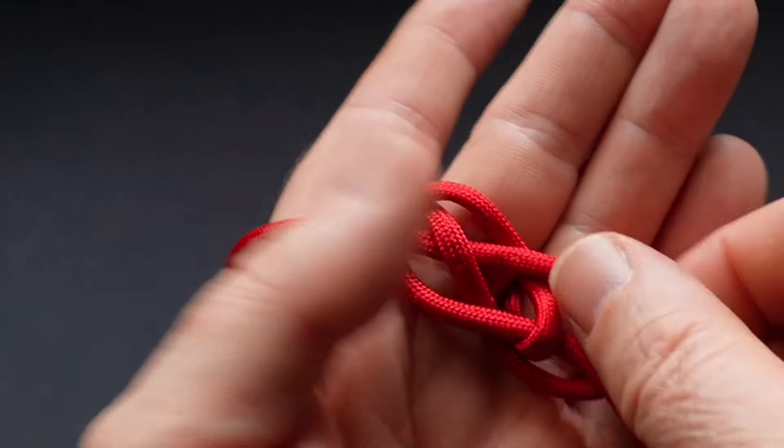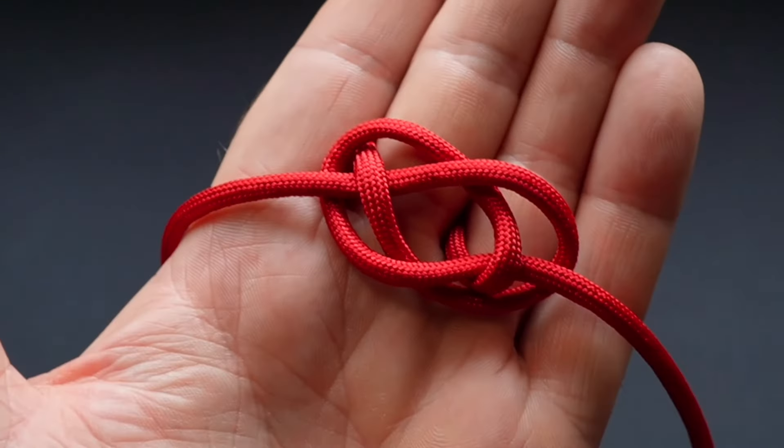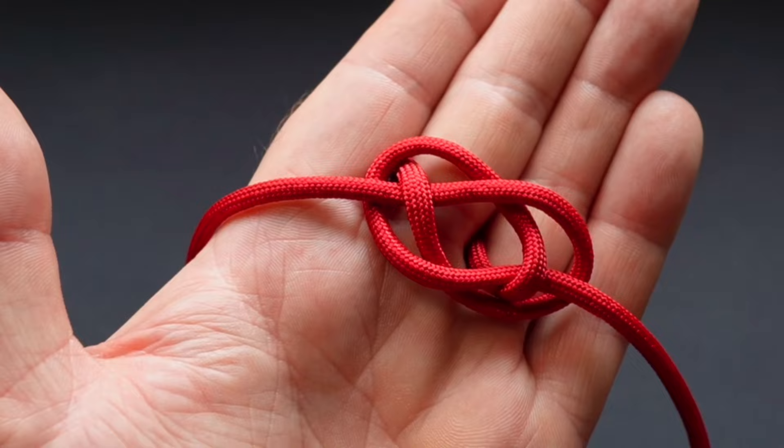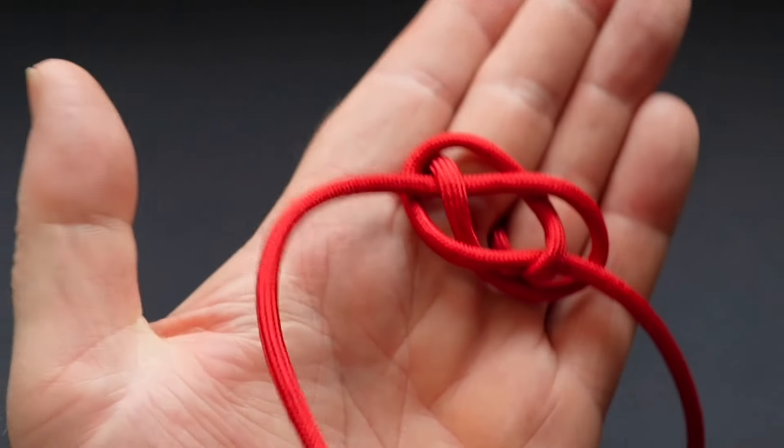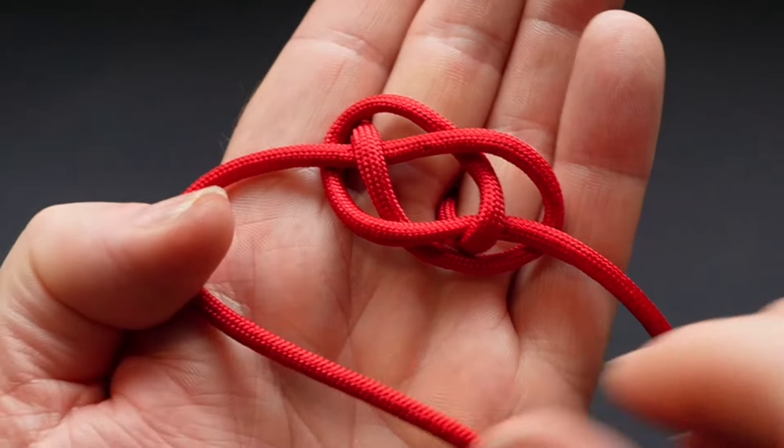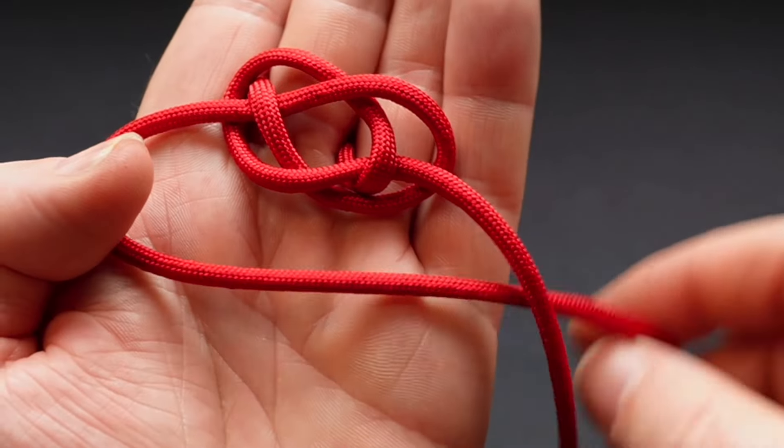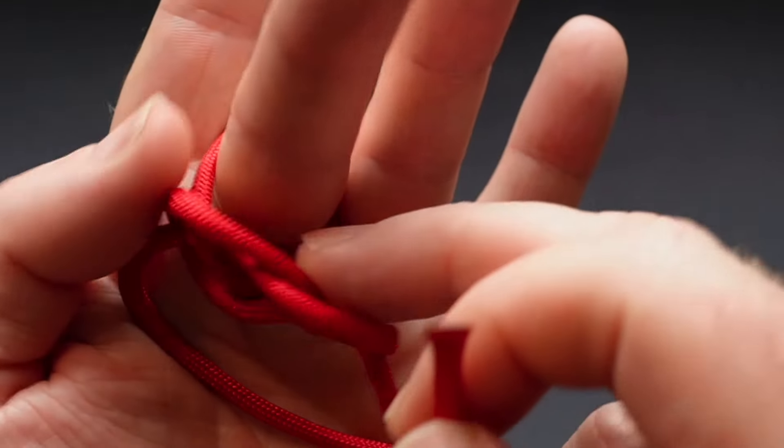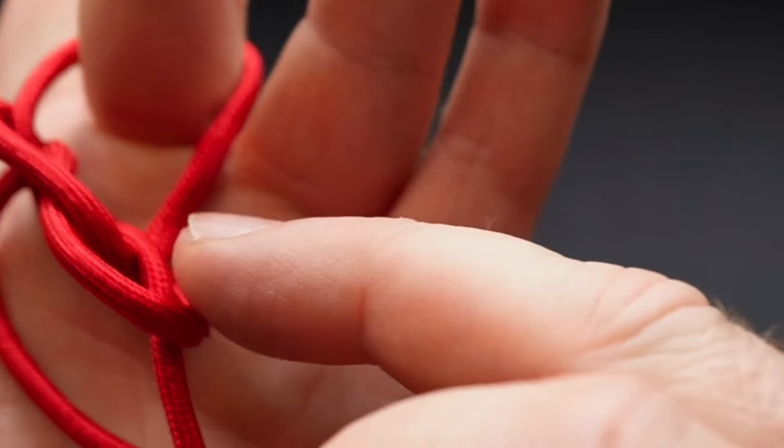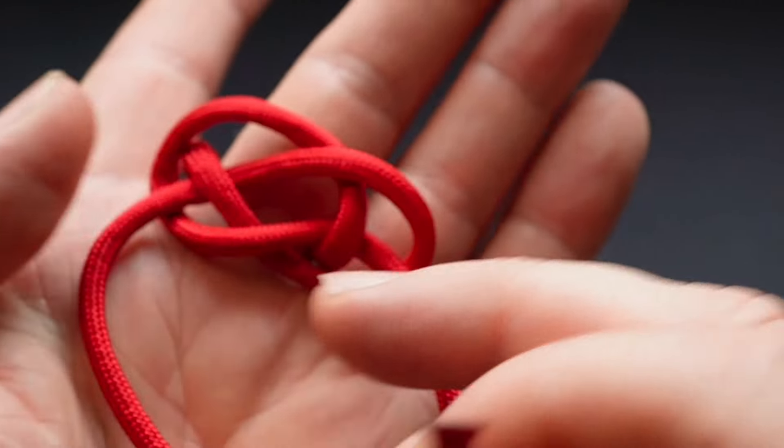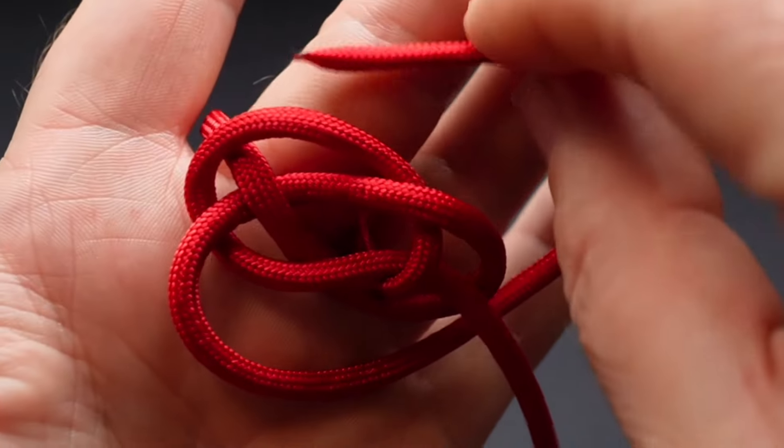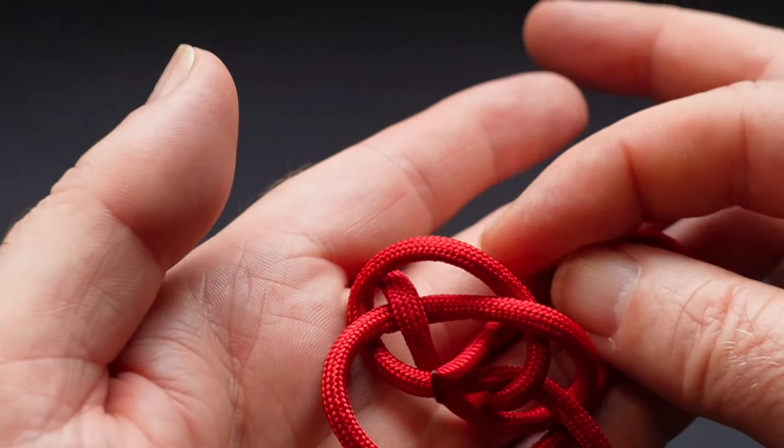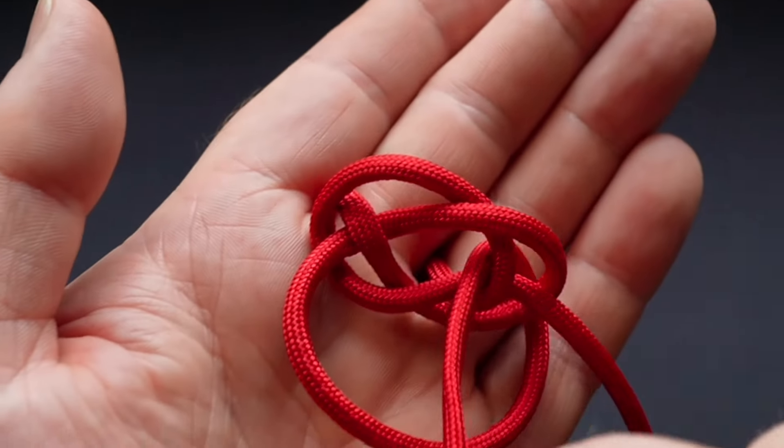What you end up with is a Carrick's bend like that. Now then, this cord here is going to go underneath like that, and you see where it comes out of my finger here, it's going to go underneath, around that piece here, and up through the middle.